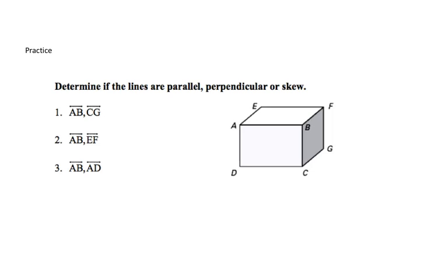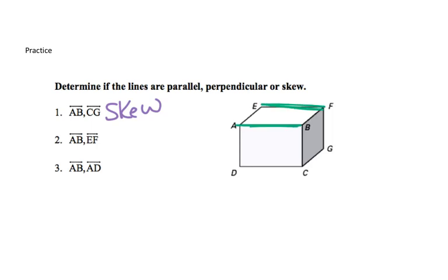Please practice problems 1, 2, and 3. AB and CG are going in two different directions — one is going towards us, one is going left to right — they'll never intersect, which makes it skew. AB and EF are both going left to right; they'll never intersect, which makes them parallel. AB and AD meet together at the corner forming a right angle, which makes them perpendicular.